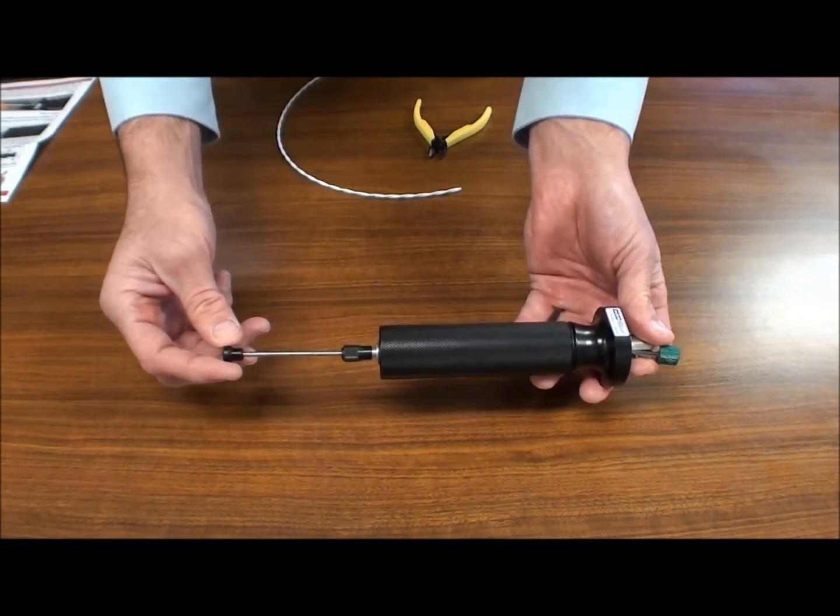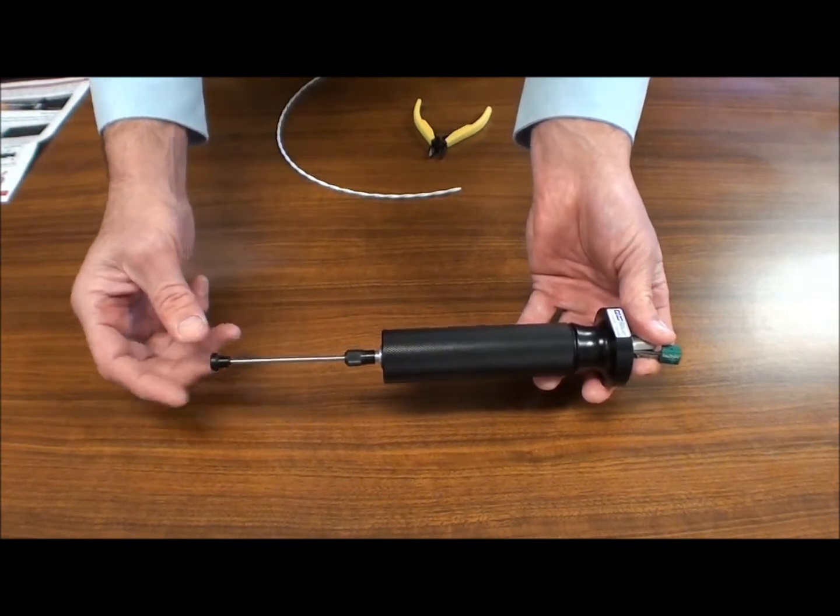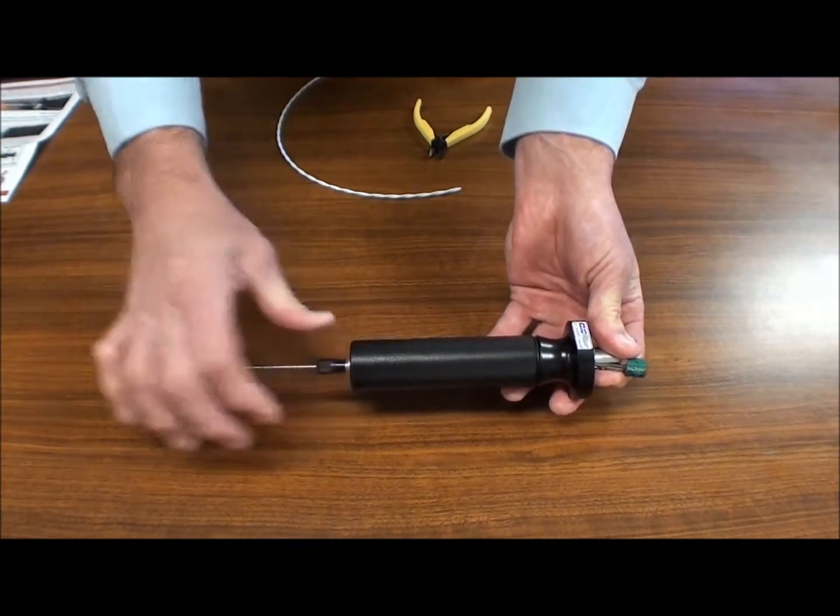So if we wanted to do two and a half inches, we would pull it out to about two and a half inches, or three inches if that's what you desire. You'll tighten it down.